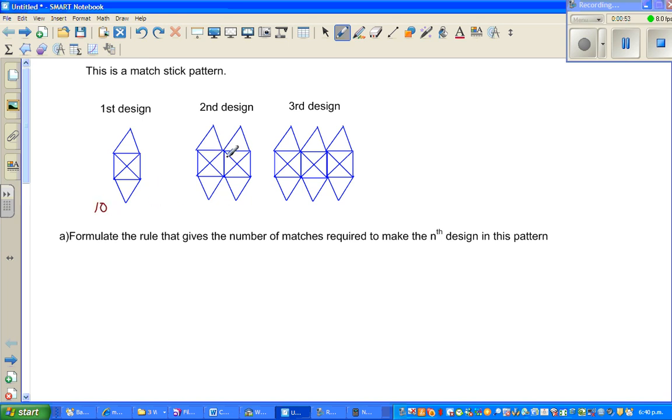The second design has 10. You should not count this second time because this is a common matchstick. So this is 10, and then of course this is 10, and if you take away this one, 10 plus nine is 19.